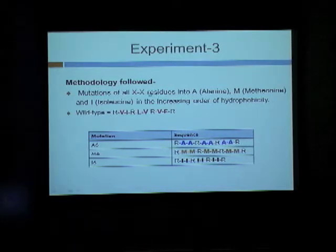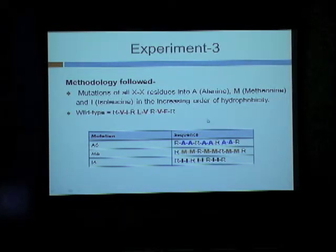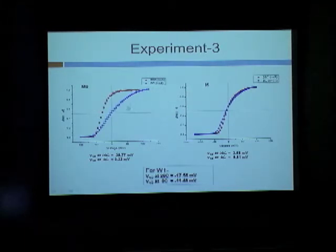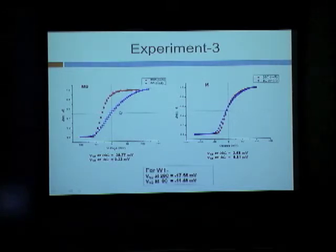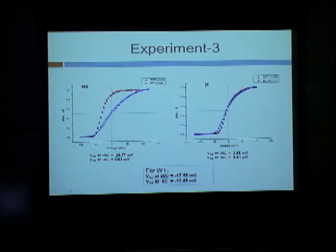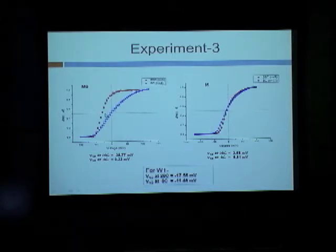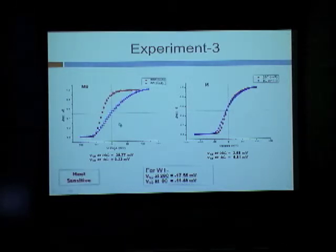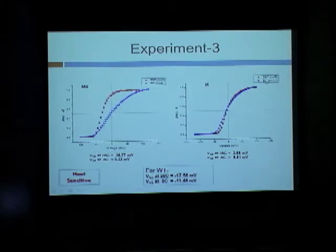In Experiment 3, we mutated all six hydrophobic residues to alanine (A6), methionine (M6), and isoleucine (I6). For M6, there is a prominent shift: at 8°C the V_half is 0.23 mV, while at 28°C it drops to minus 28.77 mV. As temperature increases the process becomes more favorable, so M6 is heat-sensitive. For I6, there is no change in V_half between 8°C and 28°C, so I6 is temperature insensitive.